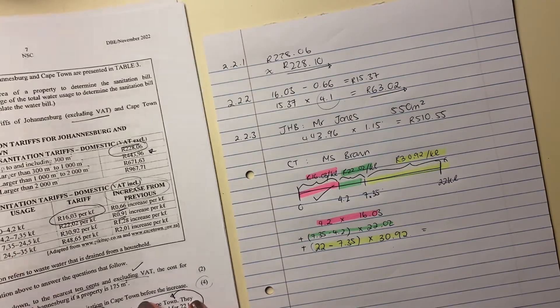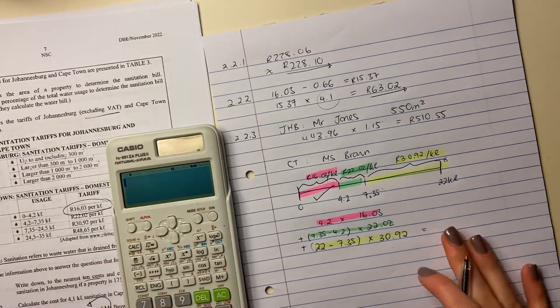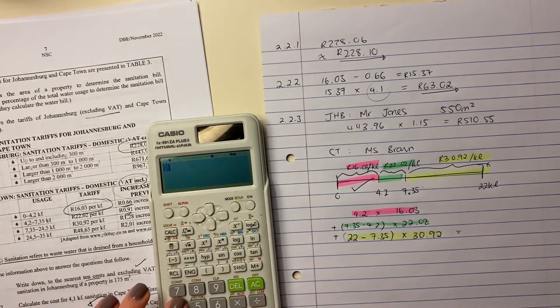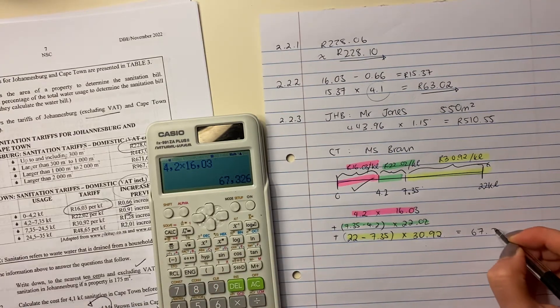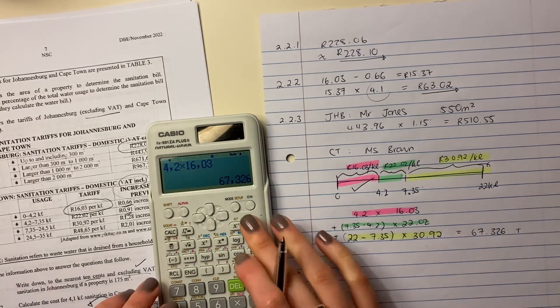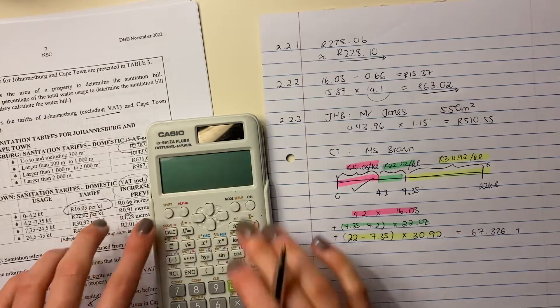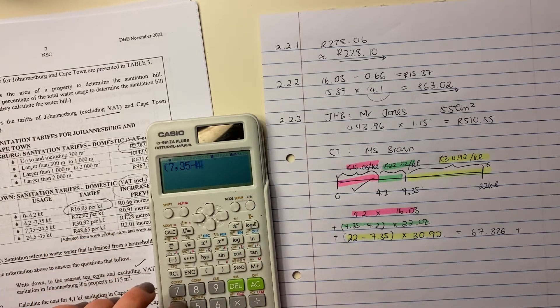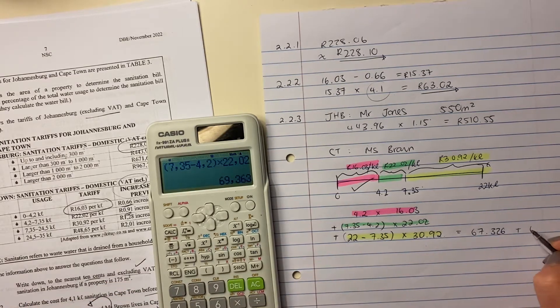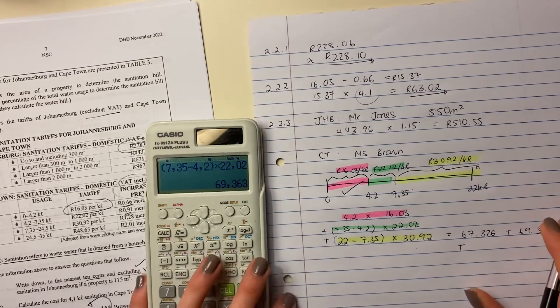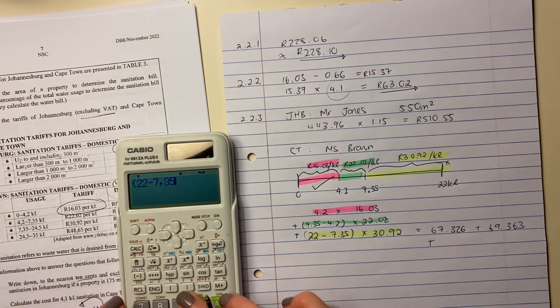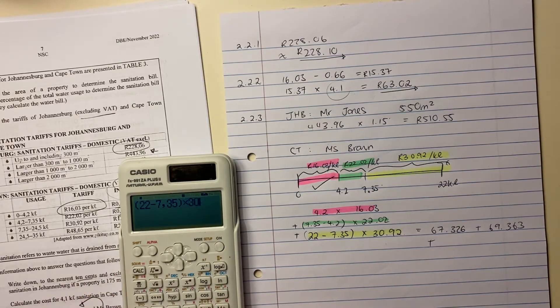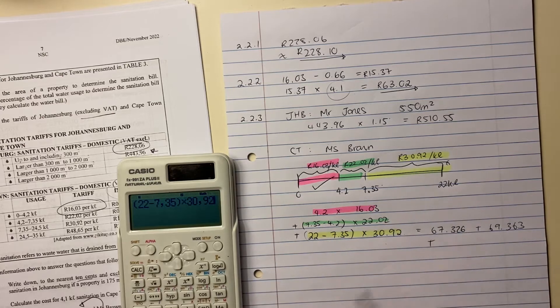And then we're going to put that into our calculator and that will give us our amount. And this is why it's eight marks because there's a lot of work that you have to do here. So you're going to say 4.2 times 16.03. And if you want, you can do what I'm doing here and actually write these out because sometimes students tend to struggle. I'm just going to write that out to put all of this into the calculators accurately. So if you're struggling, do what I'm doing and hopefully that will help you.